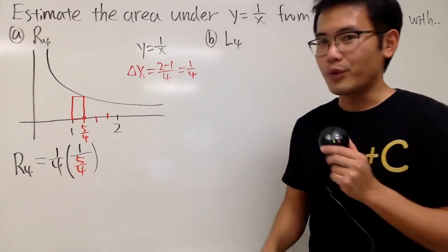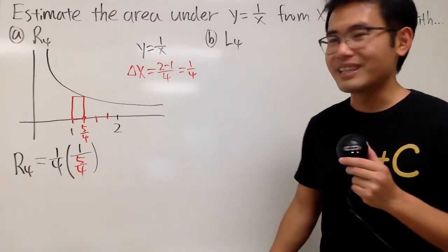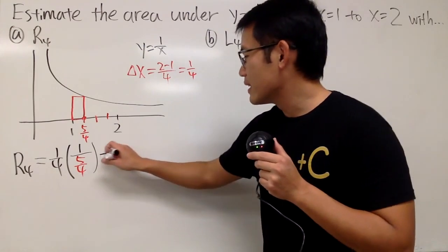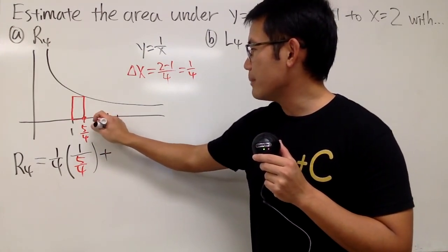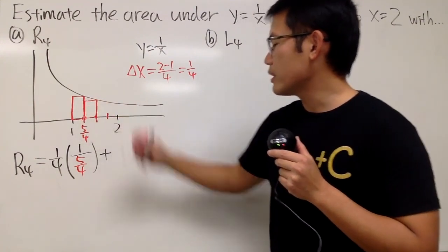But I'll write it down right here for you guys, because later on we can just punch this into the calculator and all that stuff. All right, next. This rectangle, I'm again starting from the right, and then I'm going to go up, hit the curve, and then make a rectangle.